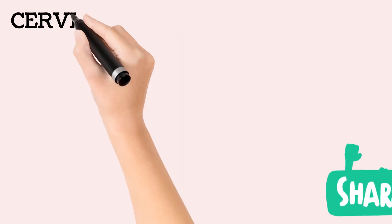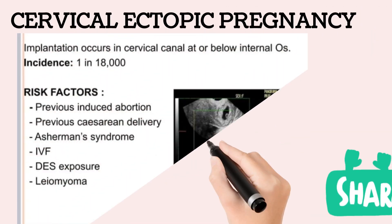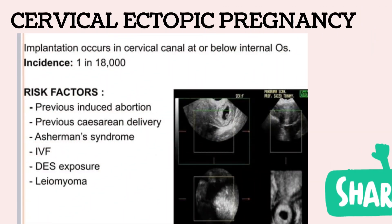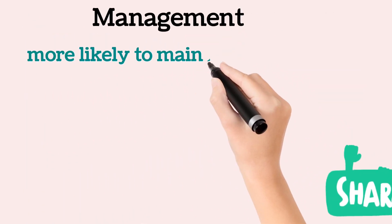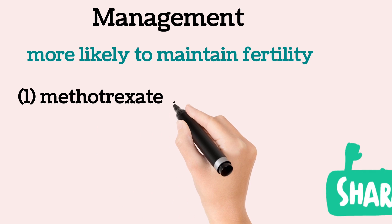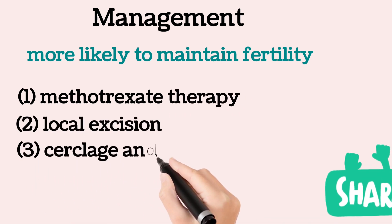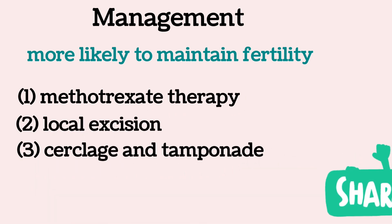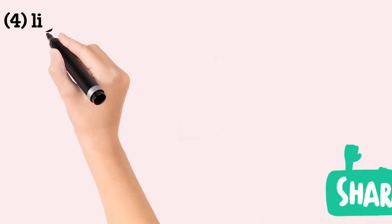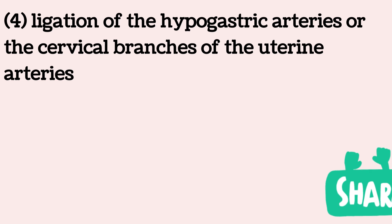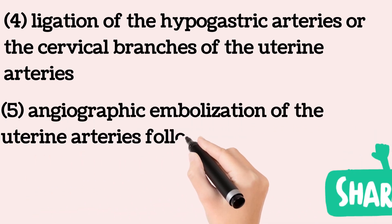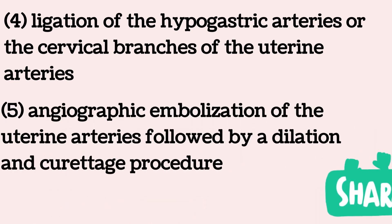Conservative surgery may be attempted for interstitial pregnancy, but hysterectomy may be required if uterine damage is severe. Cervical pregnancy can result in massive hemorrhage due to the inability of the cervix to contract. Management options to maintain fertility include methotrexate therapy, local excision, cerclage and tamponade, ligation of the hypogastric arteries or the cervical branches of the uterine artery, and angiographic embolization of the uterine arteries followed by dilatation and curettage.